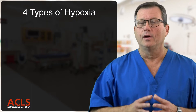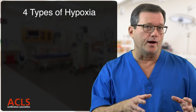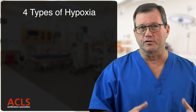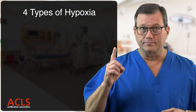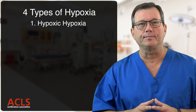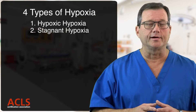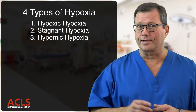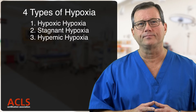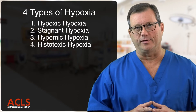Turns out there's four main types of hypoxia. We need to quickly identify what kind of hypoxia our patient has so we can treat it. And they are: hypoxic hypoxia, stagnant hypoxia, hyphemic hypoxia, and histotoxic hypoxia.